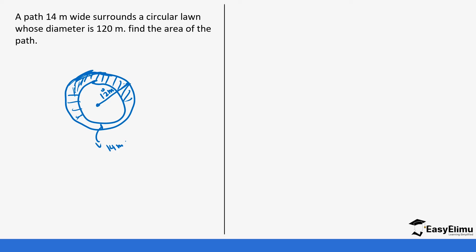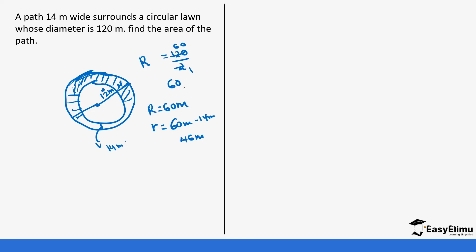We have been told the path is 14 meters wide and the diameter is 120 meters. The bigger radius R is 120 divided by 2, which gives us 60 meters. The small radius r is found by subtracting 14 meters from 60 meters, because the path is 14 meters wide. So 60 minus 14 gives us 46 meters. It is important to interpret the question well so that you get the calculation right.